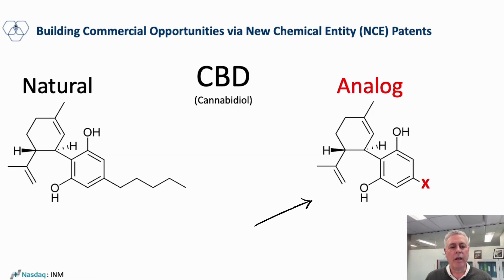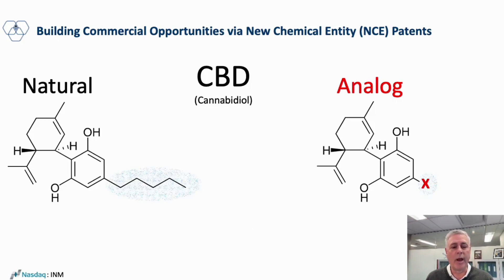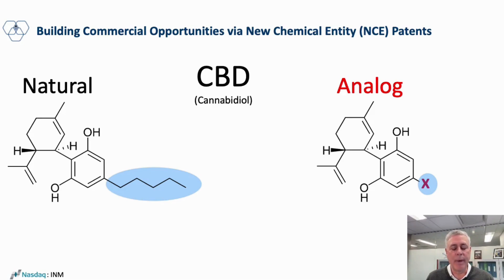In order to create an analog, you would modify one of the chains on the side of the compound in order to improve it in one way or another. You can see here, highlighted in blue, a side chain where we can modify the structure by adding either a new compound or a new molecule in order to improve or change the makeup as well as the performance of CBD.